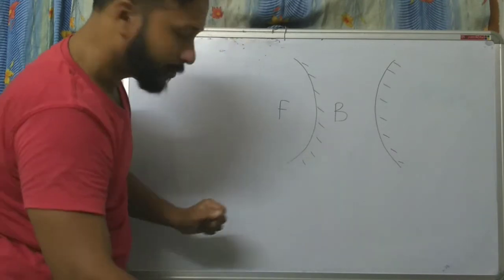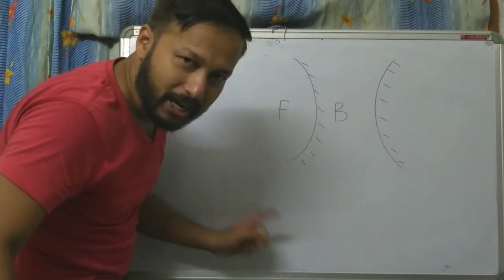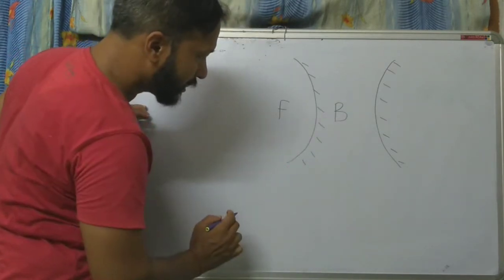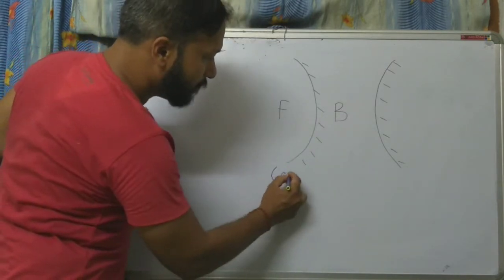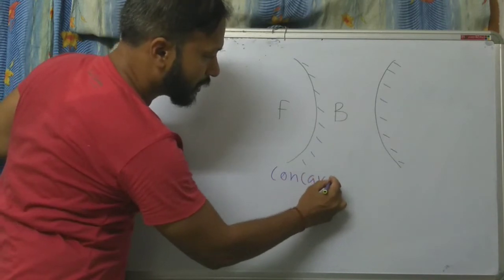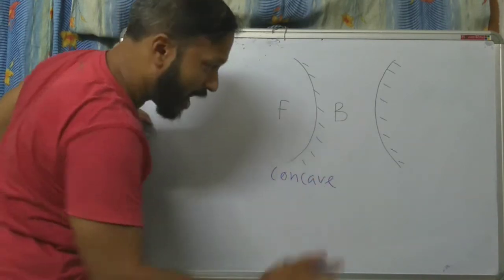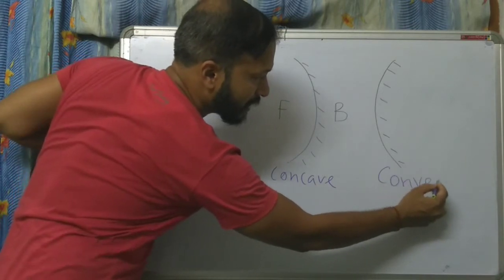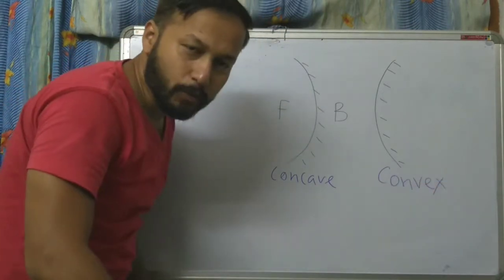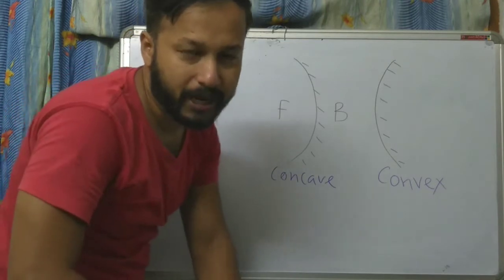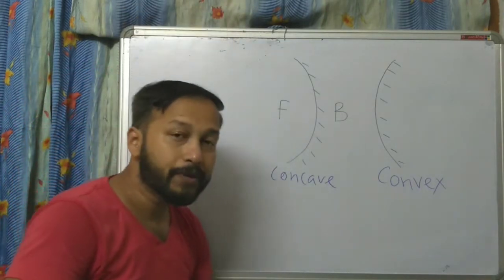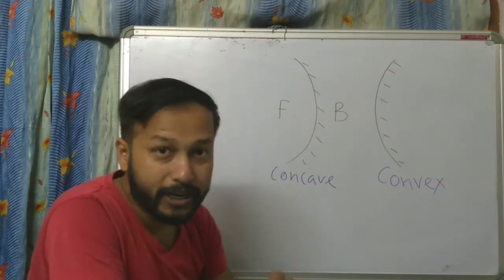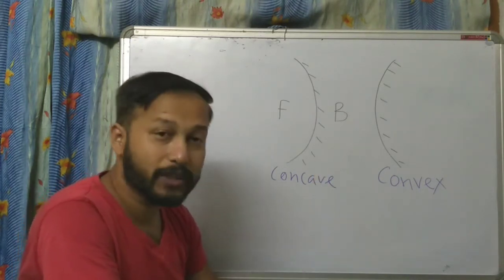These types of mirrors which are not plain — unlike the plain mirror we use at home — are called spherical mirrors. There is a special name given to each: this mirror is called a concave mirror, and this is called a convex mirror. Now we will discuss some terms related to these mirrors.